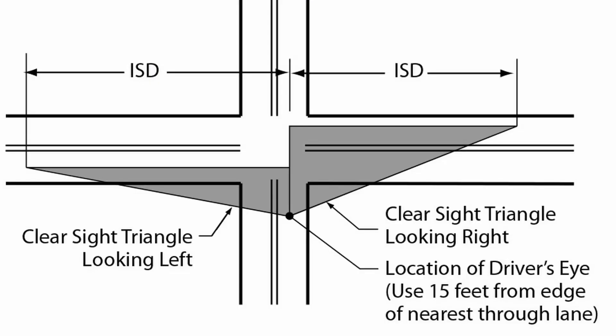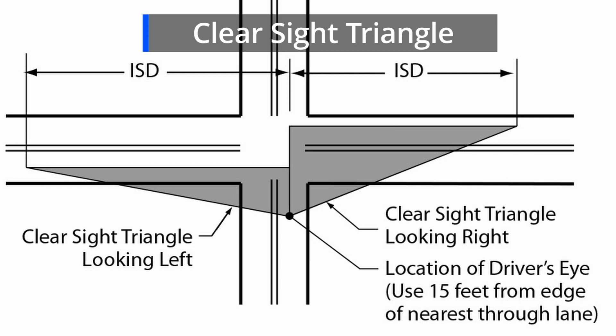By removing these obstructions from the sight triangles at stop-controlled intersections, drivers will be able to see approaching vehicles on the main line without obstruction and therefore make better decisions about entering the intersection safely. These better decisions can reduce overall intersection crashes by 48%. The area needed for this unobstructed view is called the Clear Sight Triangle.